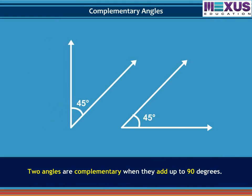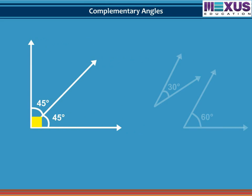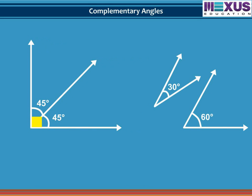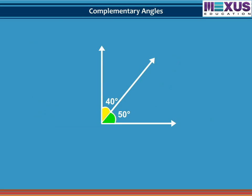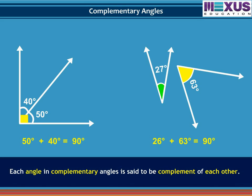When we add any two angles and get a sum of 90 degrees, then the angles are said to be complementary angles. It is not necessary that both are adjacent to each other. If they are adjacent, they form a right angle. For example, angles 40 degrees and 50 degrees are complementary because they add up to 90 degrees and form a right angle here. But angles 27 degrees and 63 degrees are not forming a right angle, yet they are still complementary as their sum is 90 degrees. Each angle in complementary angles is said to be the complement of the other.